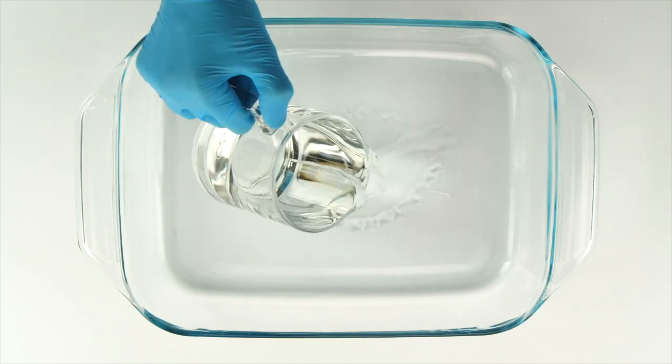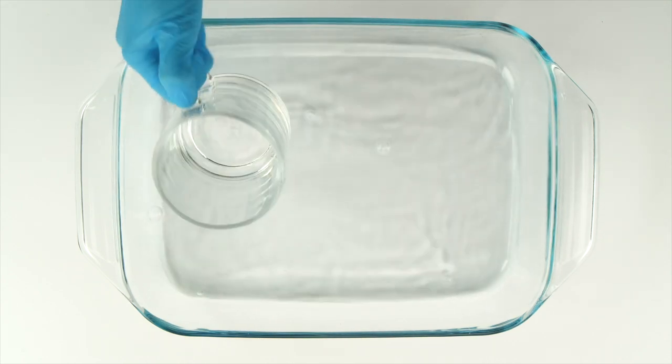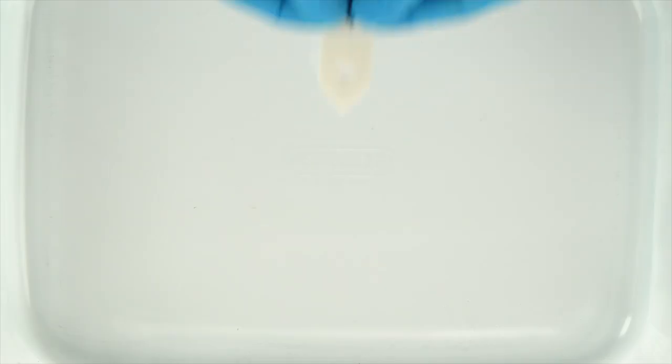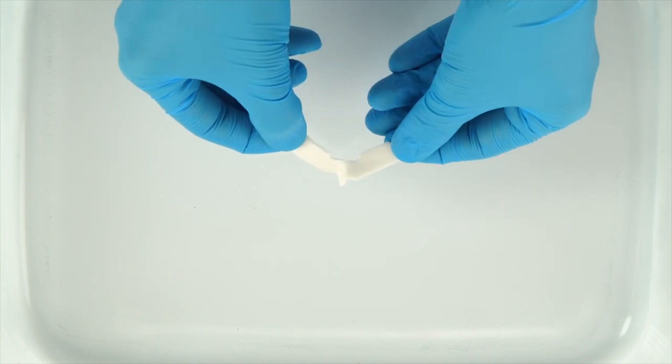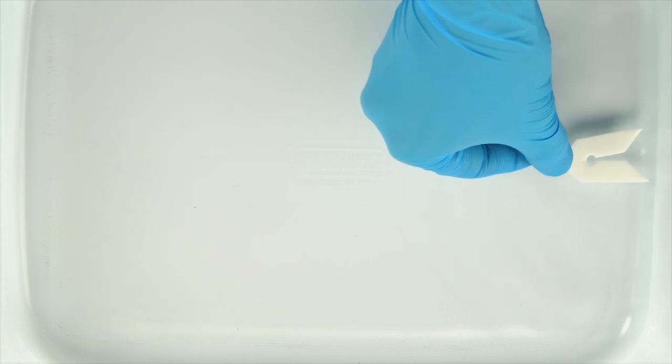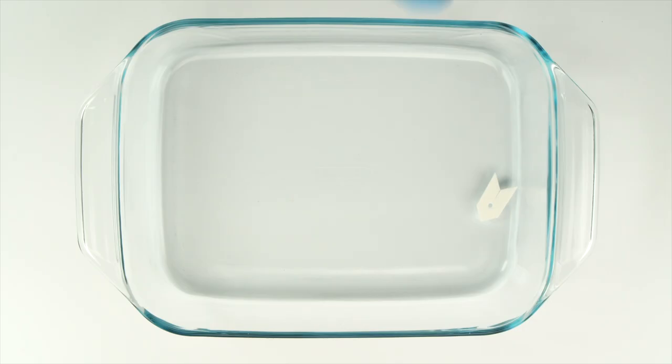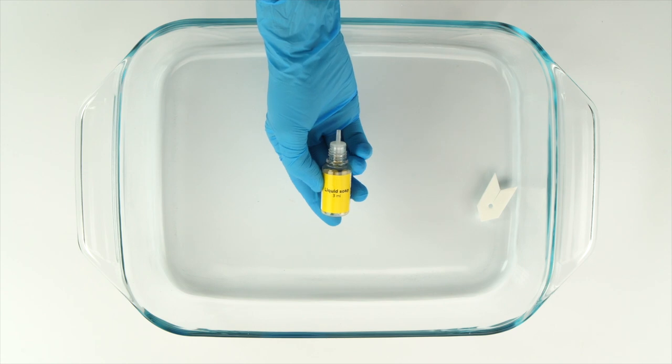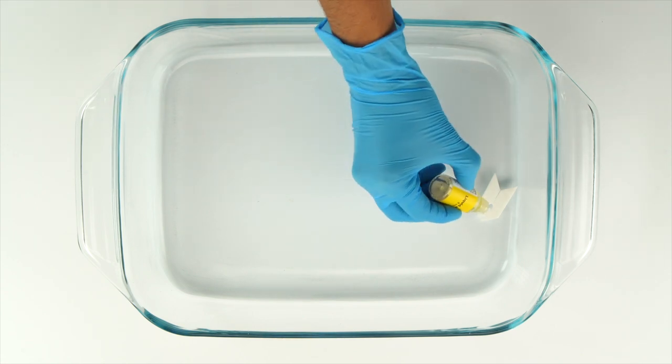Fill the bowl approximately halfway full with water. Take the plastic boat and separate its sides slightly. Put the boat in the water at the edge of the bowl with its nose pointing inward. Squeeze one drop of liquid soap into the hole in the center of the boat.